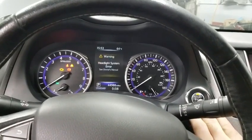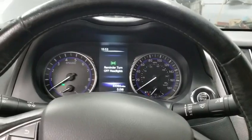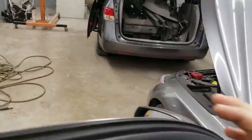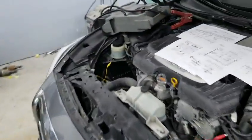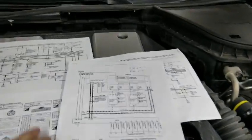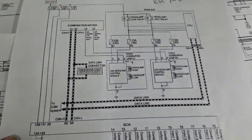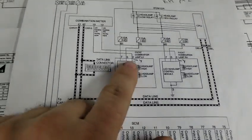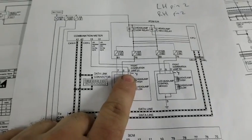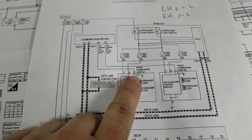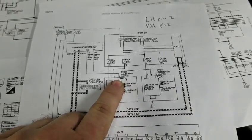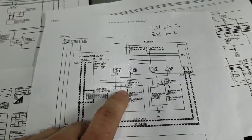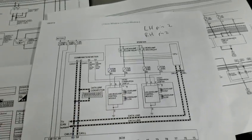I'll show you the schematic in a second. So this is the schematic right here. As you can see, different makes — like the Nissan Rogue — have certain pins. Infiniti has different pins. Different makes and models will have different pins, so that's why it's very important to look at the schematic.